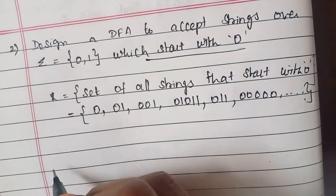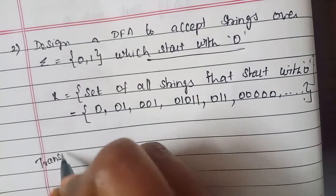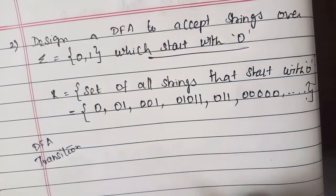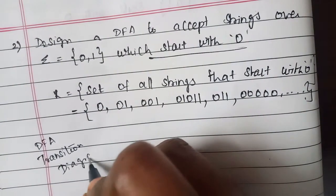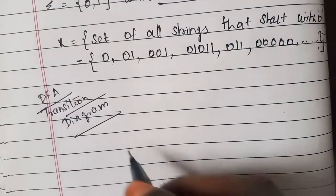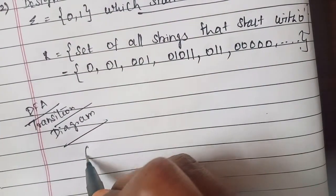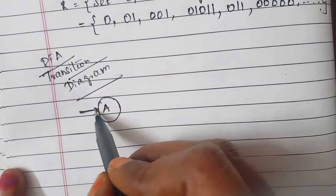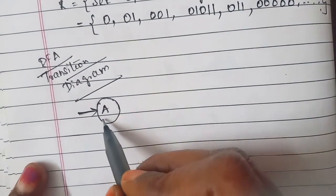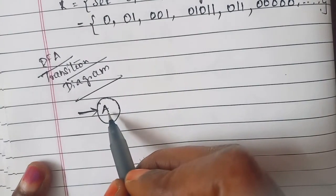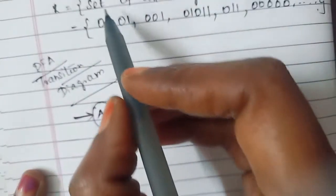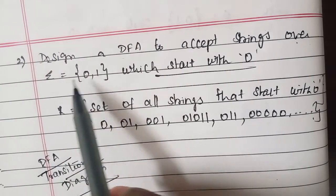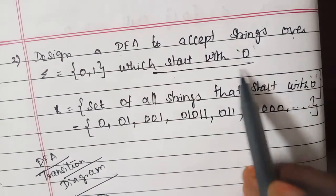Now we need to draw a transition diagram, which is known as a DFA. We have a start state — the start state always has an arrow pointing from nowhere into it. In this case, A is the start state. We are designing a DFA to accept strings over Sigma = {0,1} which start with 0, so the string should only start with 0.